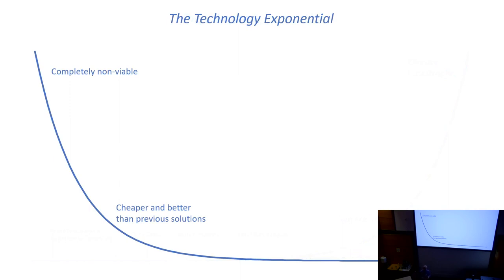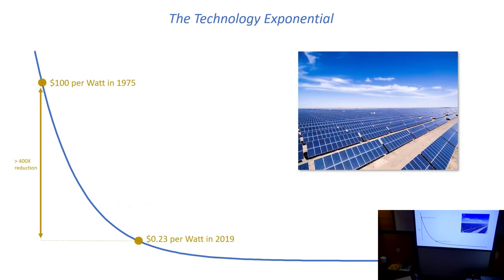I said there were two exponentials. The other exponential is the technology exponential, and it works in the other direction. Certain technologies become exponentially cheaper and exponentially better over time.